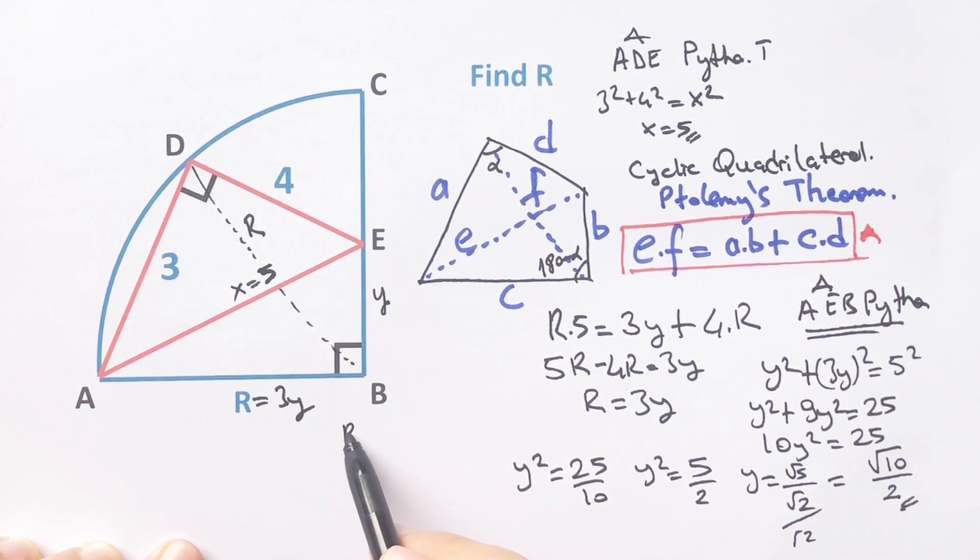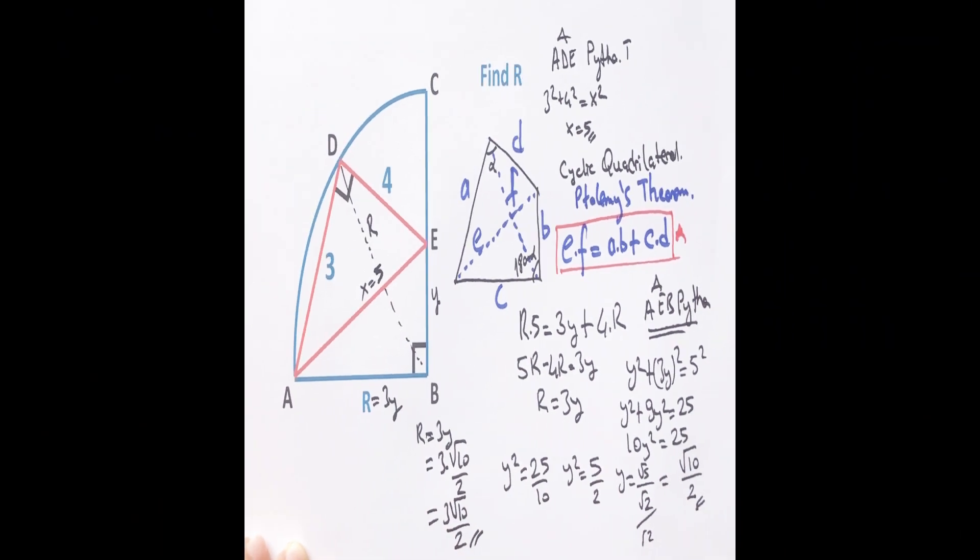So the radius of the quarter circle equals 3y. Therefore, radius equals 3 root 10 over 2.